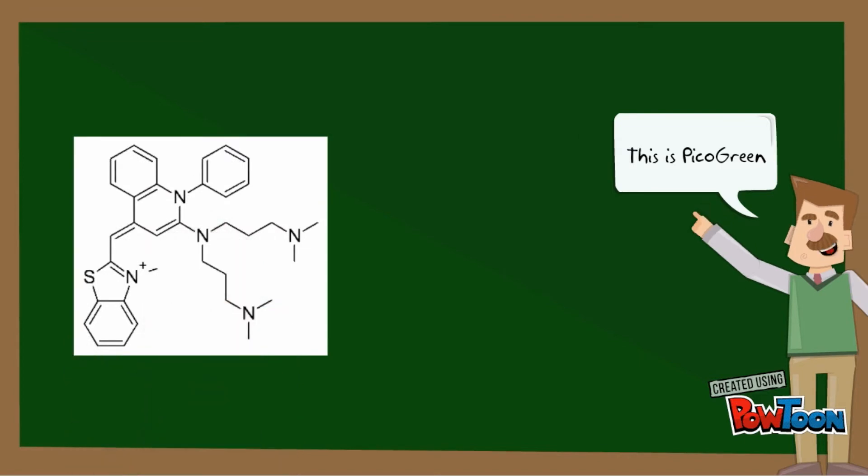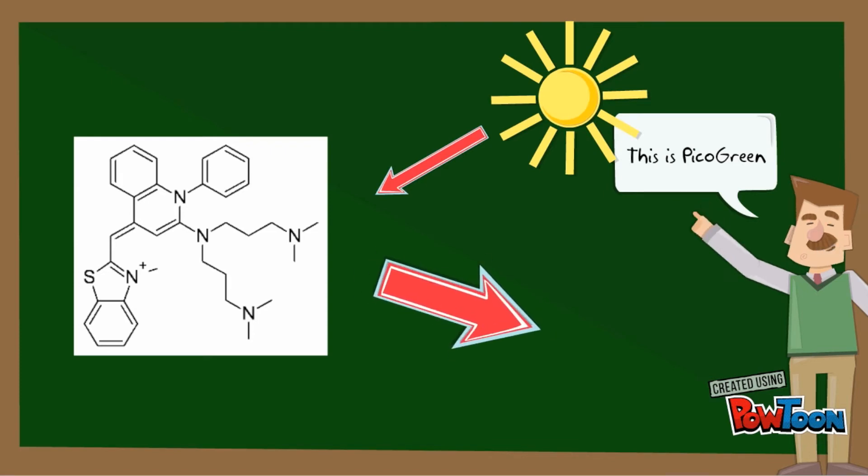Pico green is a molecule that fluoresces when it binds to double-stranded DNA. Fluorescence works through the excitation of a molecule through one wavelength and the emission of the energy through another wavelength. When pico green is free-floating, its fluorescence is quenched. An energy output occurs through intramolecular fluctuations.